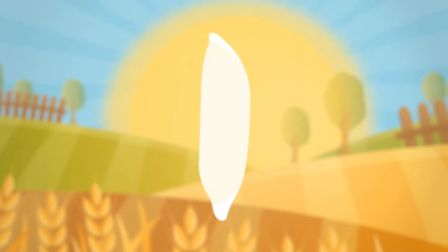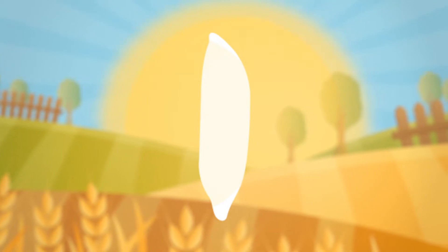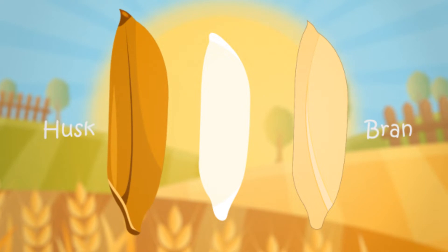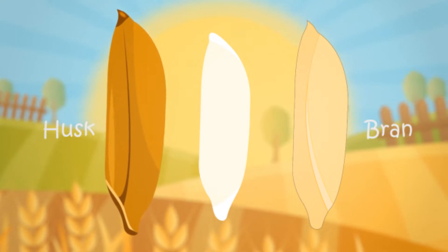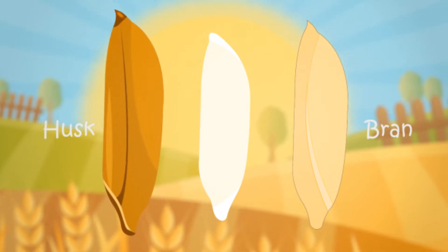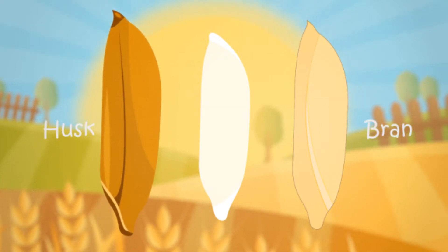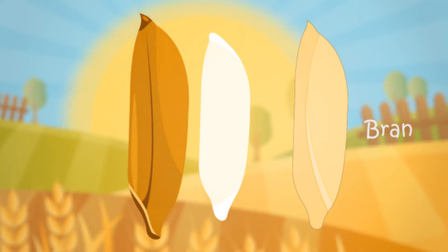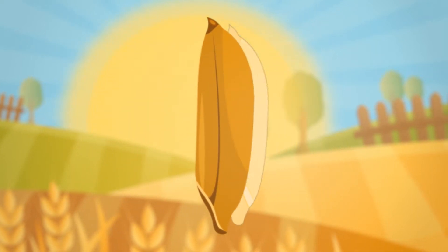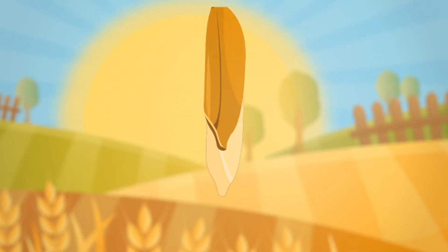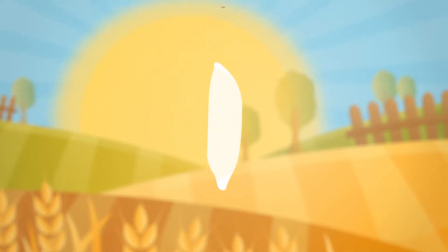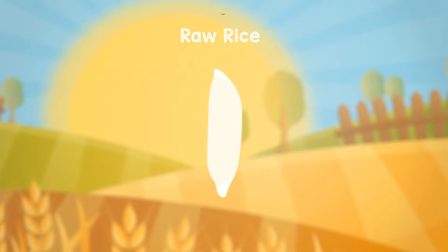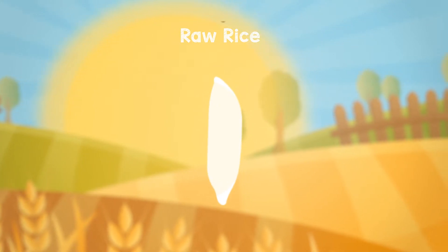The white rice we eat is covered with an immediate layer of bran and then an outer layer of husk. White rice is obtained by removing the layers of husk and bran from the paddy. Mere removal of husk and bran from the paddy without any processing yields the raw rice.